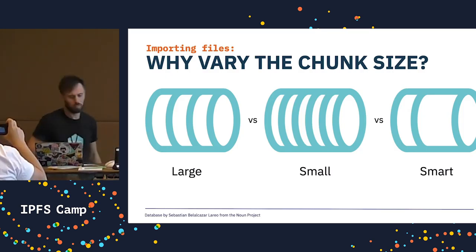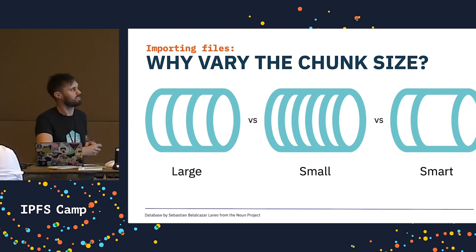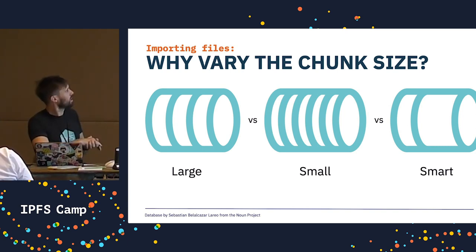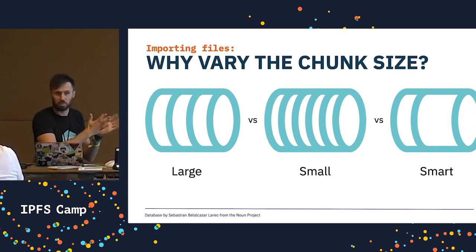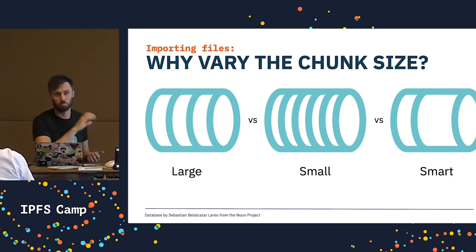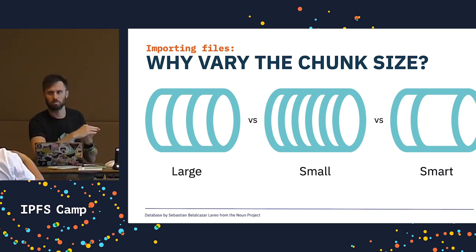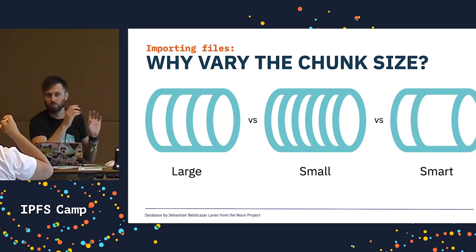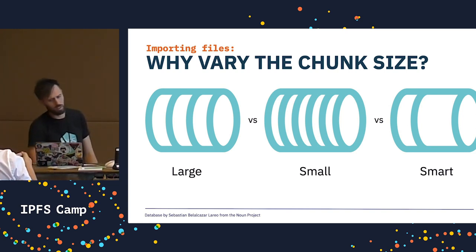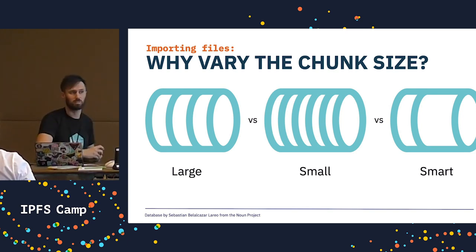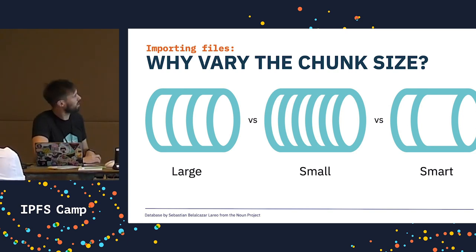Why vary the chunk size? The default in IPFS is to chunk files in fixed chunk sizes. Smaller chunks — because they've got fewer bytes — give a better chance of deduplication, but it's more work up front to create and hash all those chunks. Larger chunk files mean less work up front, fewer nodes to traverse when transferring data, but not necessarily as great at deduplication.